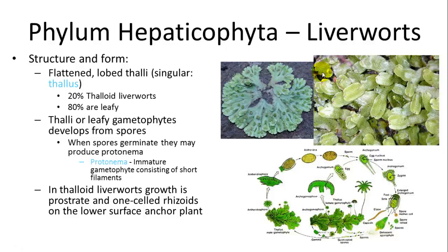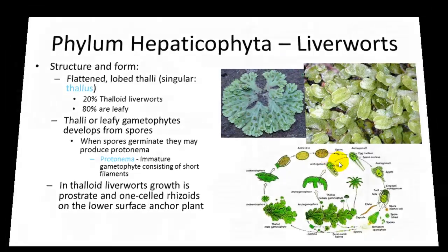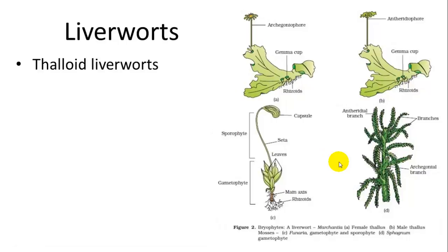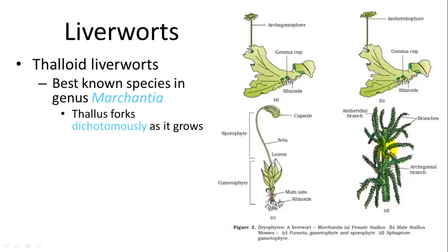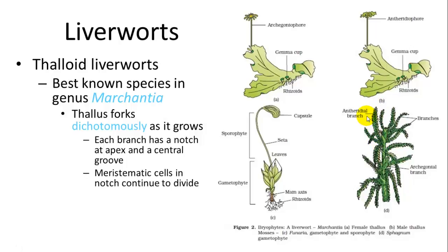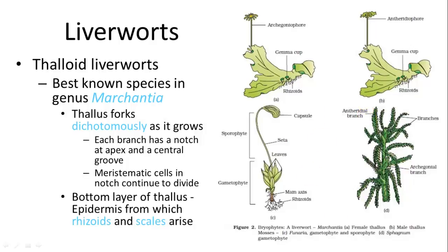The best known thaloid liverworts are in the genus Marchantia. The thallus forks dichotomously as it grows, and each branch has a notch at the apex and a central groove. Meristematic cells in the notch continue to divide, allowing continued growth. The bottom layer of the thallus is the epidermis, and that's where the rhizoids and scales arise.